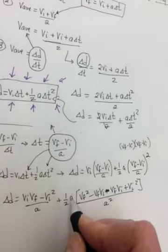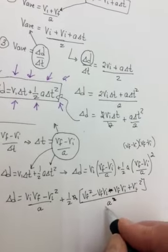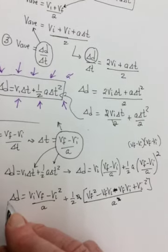Well, this a here in front of the bracket and the squared on this a will cancel. So it'll just leave as a on the bottom. And now we have a on the bottom of both, so we could bring it up here.